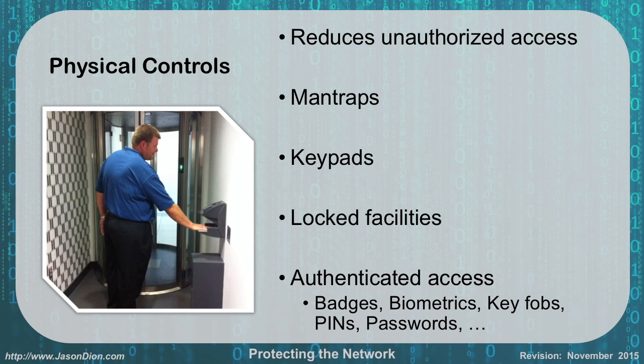There are lots of different ways to authenticate somebody's access to a physical area. We can use RFID badges, biometrics such as your voice print, retinal scans, fingerprints, hand scans, key fobs, PIN numbers, or a password. For instance, where I work, I have to scan my RFID badge and put in a PIN number — between those two things, the man trap opens and lets me walk through the front entrance.